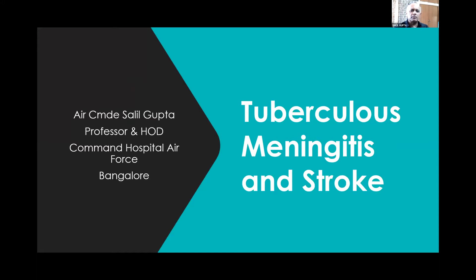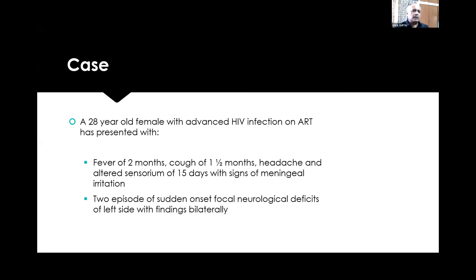I will be speaking on strokes associated with meningitis. I start with a typical case presentation of a case we had seen a few years ago — this case was in Pune. This lady would be a typical type of case which most of you would have seen in your practice. This is a 28-year-old female with advanced HIV infection on ART, presented with fever of two months, cough of one and a half months duration.